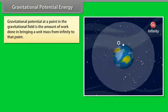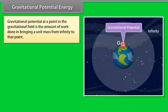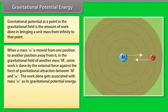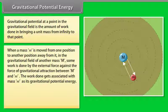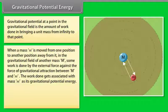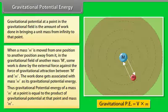Gravitational potential energy. Gravitational potential at a point in the gravitational field is the amount of work done in bringing a unit mass from infinity to that point. When a mass m is moved in the gravitational field of another mass M, some work is done by the external force against gravitational attraction. The work done gets associated with mass m as its gravitational potential energy, which is equal to the product of gravitational potential at that point and mass m.